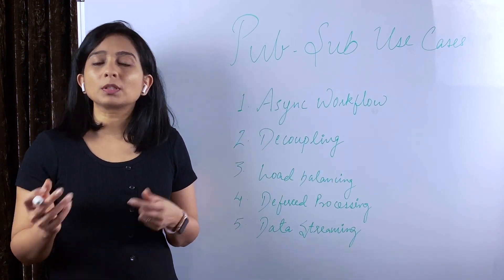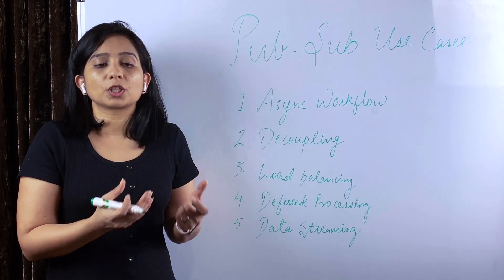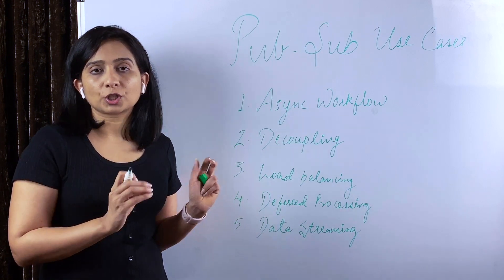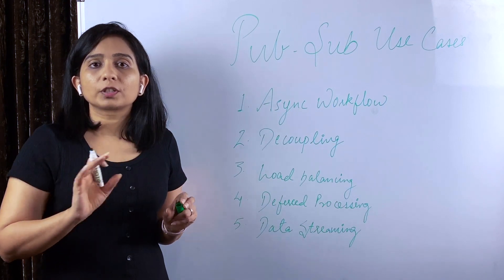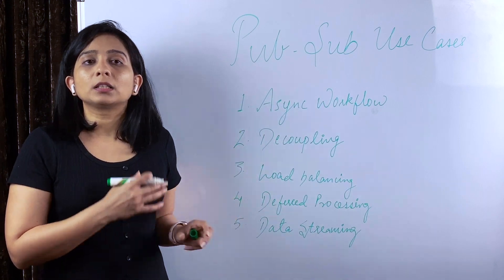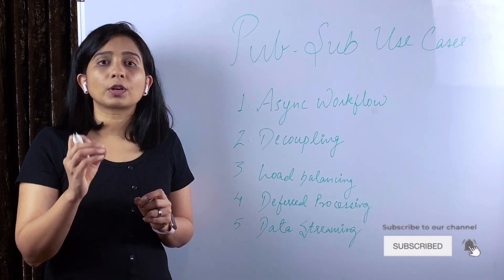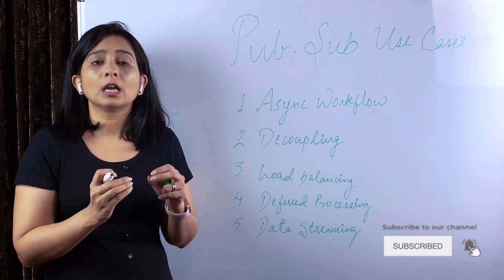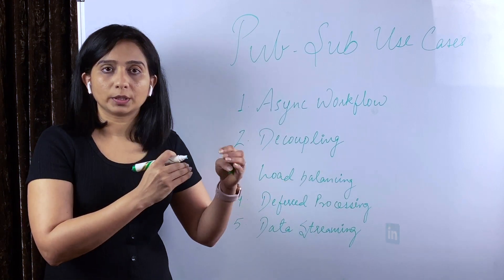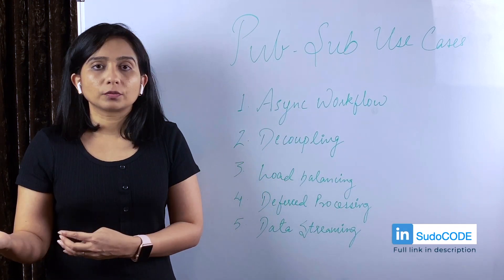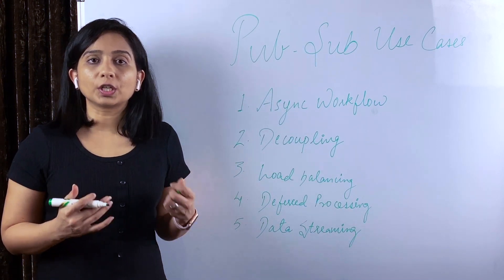One more case: sometimes even in asynchronous messaging you need an acknowledgement — the publisher sends a message and needs confirmation from the subscriber that it was received and will be processed. In that case, this pattern is modified through application code and libraries to introduce the acknowledgement piece. The key point is that PubSub can be coupled with other patterns or modified to serve different system needs, since every system has different requirements.